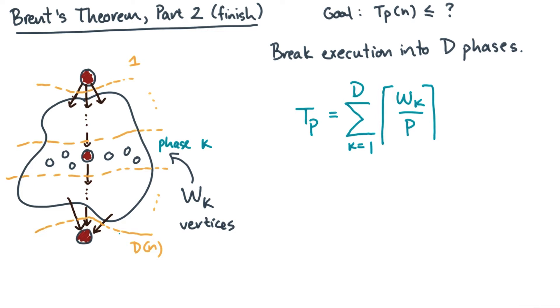And each phase K does WK units of work. And the time to execute each phase is the ceiling of WK over P. And it's these pesky ceilings that we want to get rid of.